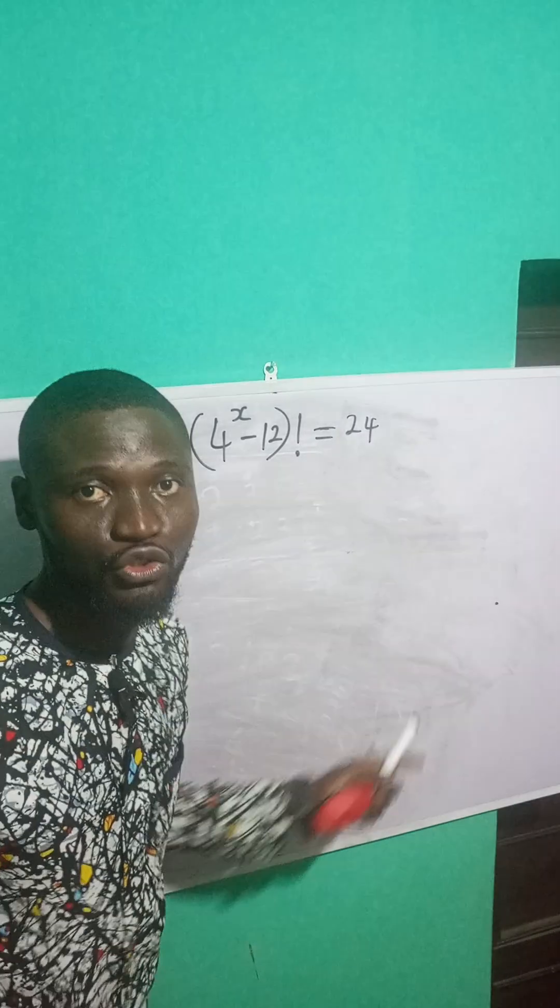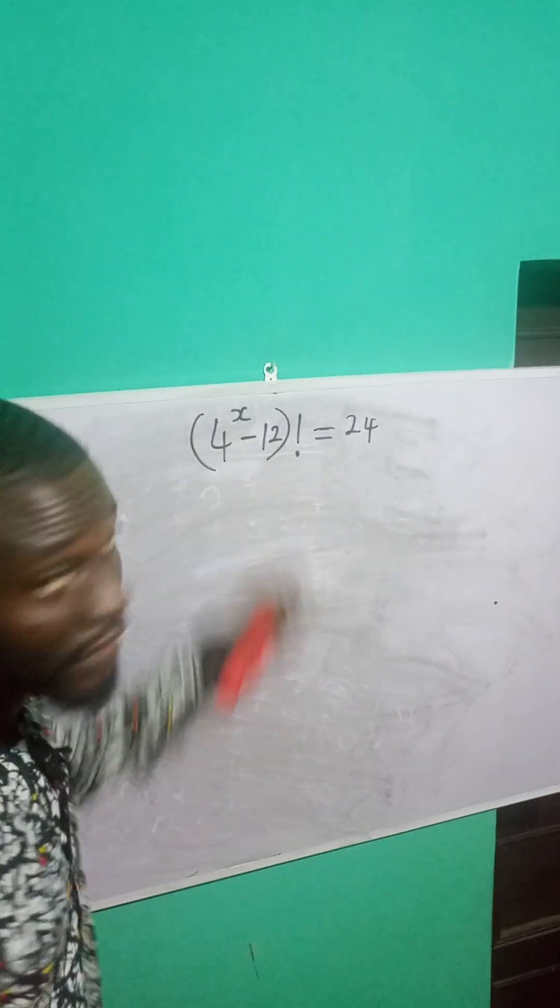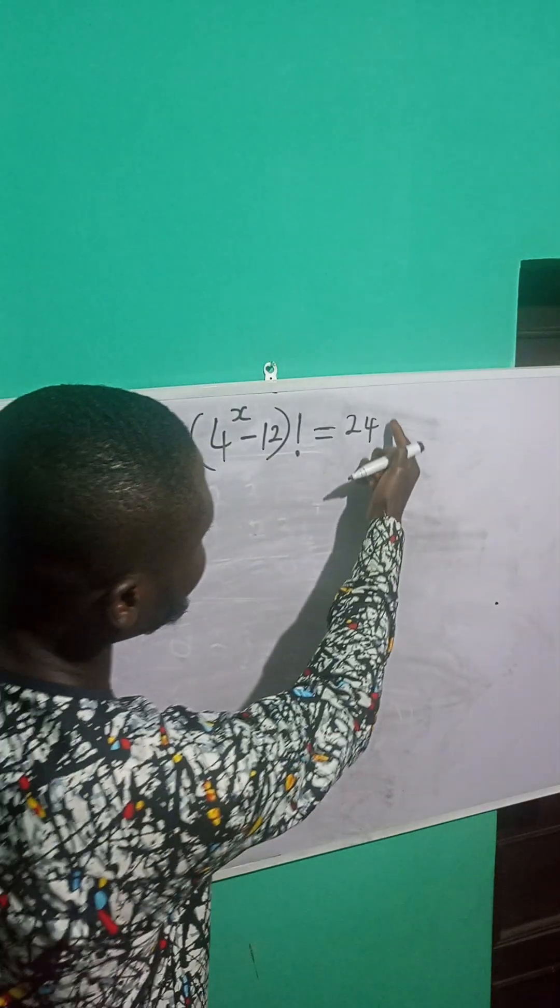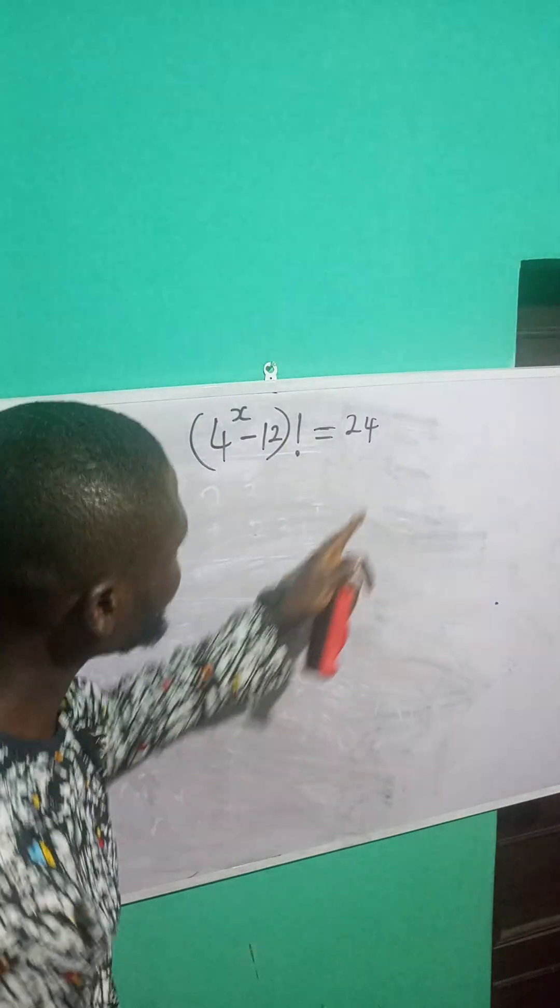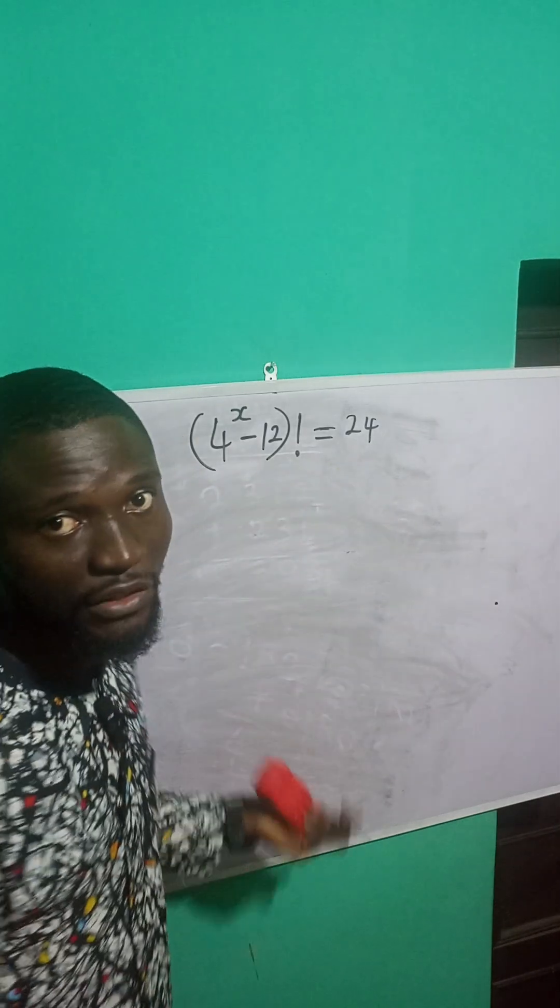So 4 raised to power x minus 12, all factorial, is equal to 24. We are looking for the value of x. Notice something: there is a factorial here, but there is no factorial here. So I need to bring in a factorial here so that I can compare the two values.